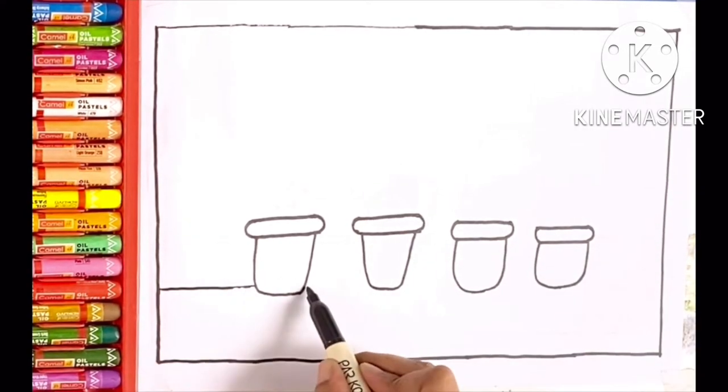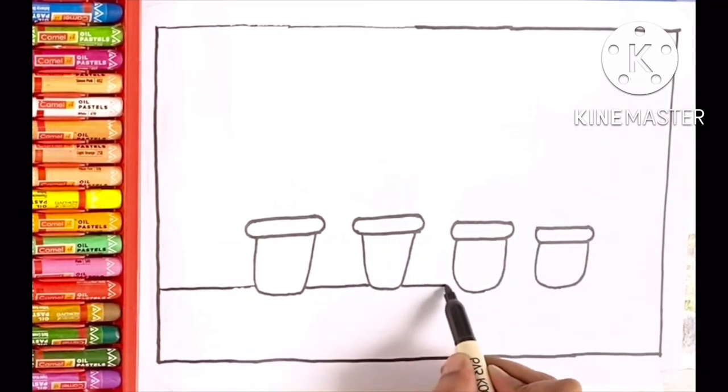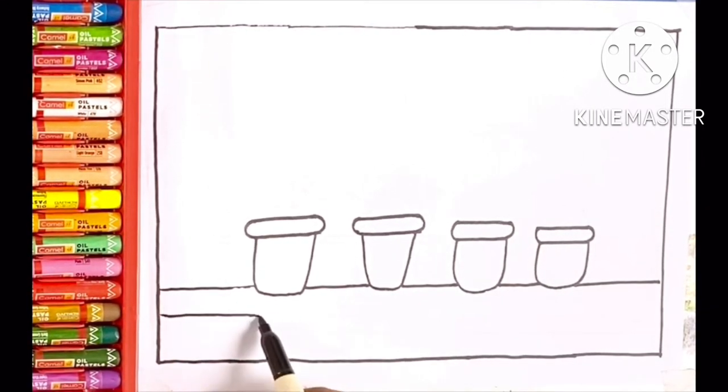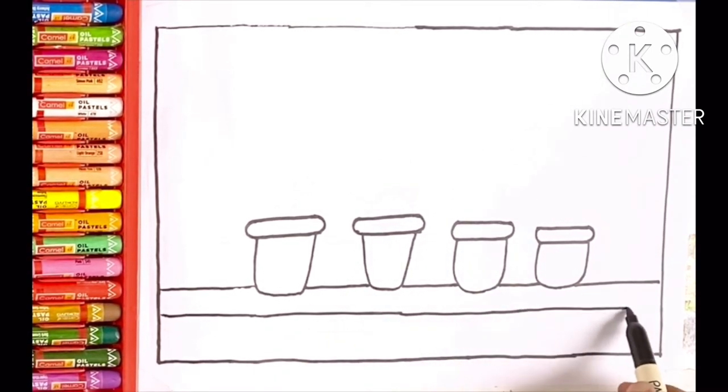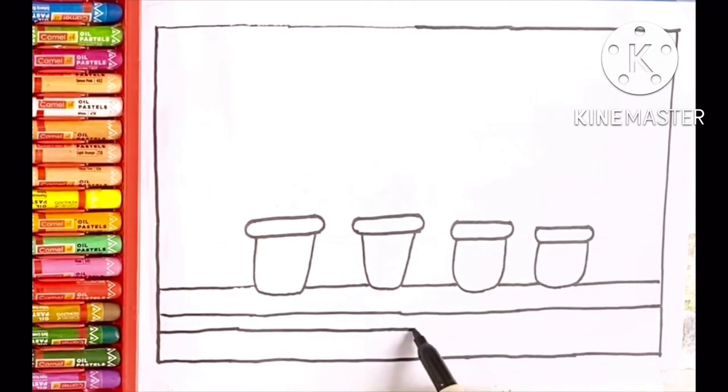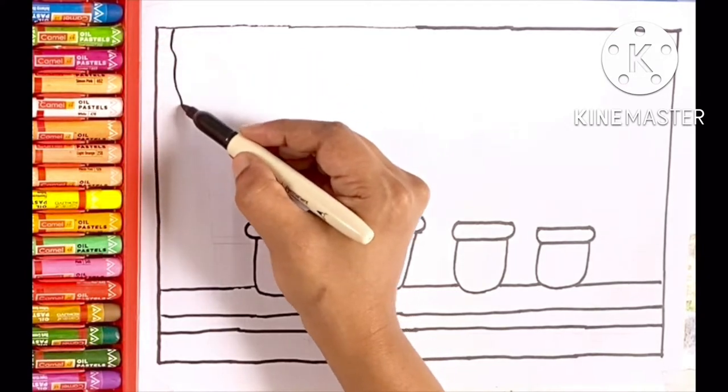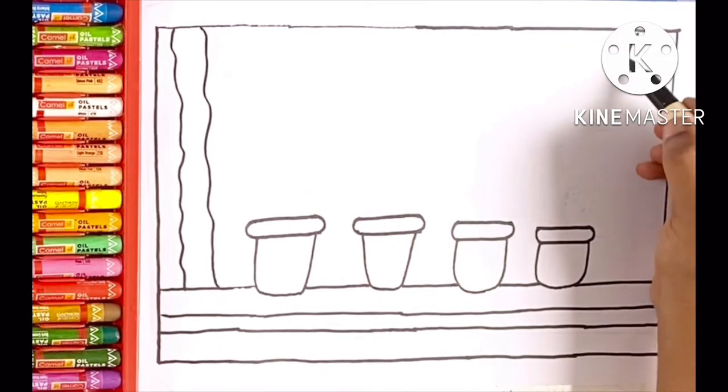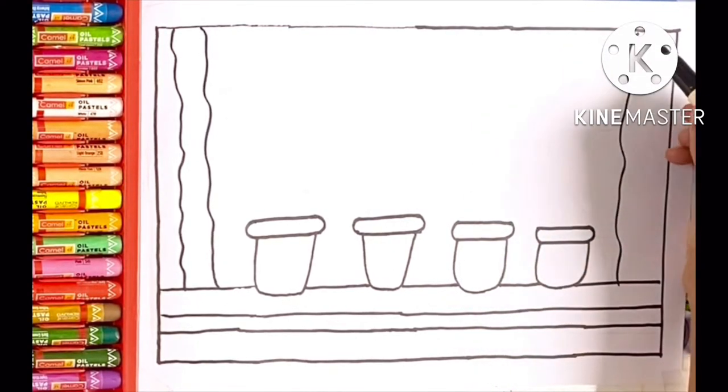Draw three straight sleeping lines from one side of the window to another side of the window for the basement of the window. Now draw standing lines with curves on both the sides of the window for curtains.